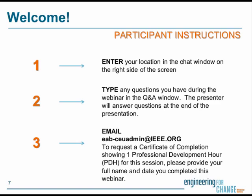During the webinar, please use the Q&A window, which is located directly below the chat window, to type in your questions for the presenter. That way we can keep track of all the questions. If you're listening to the audio broadcast and you encounter any troubles, try hitting stop and then start. If that doesn't work, you can use the call-in number for the teleconference. You may also want to try opening up WebEx in a different browser. Following the webinar, to request a certificate of completion showing one professional development hour or PDH for this session, please provide your full name and the date, as well as the code that we will provide you at the end of the session. Send this information to eab-ceuadmin at IEEE.org.